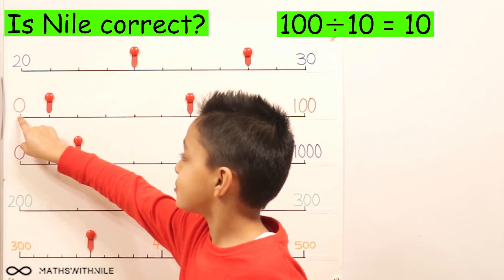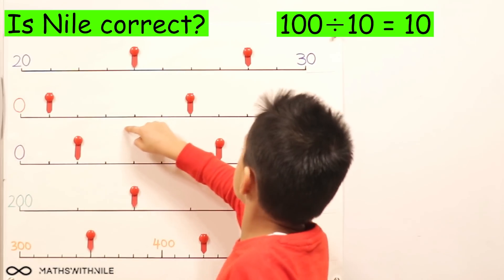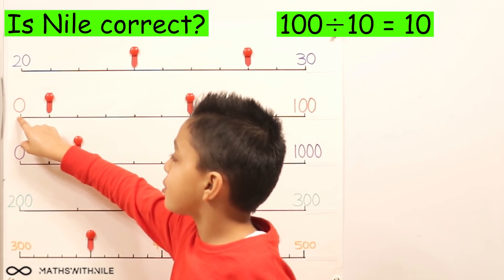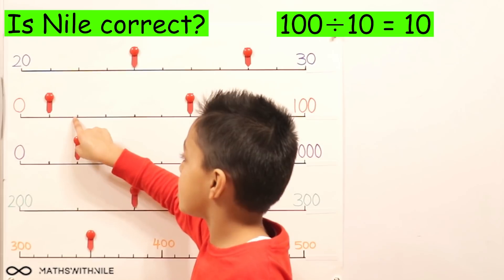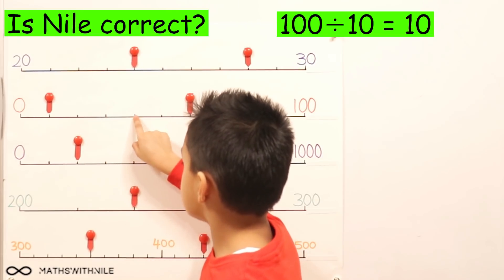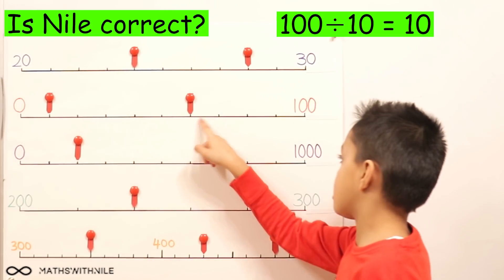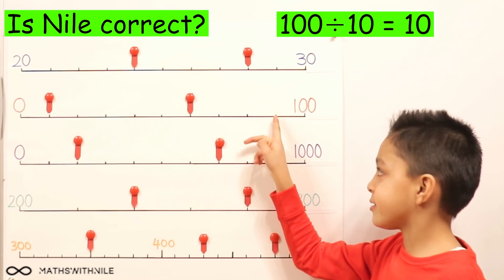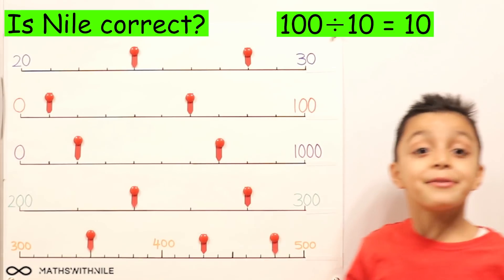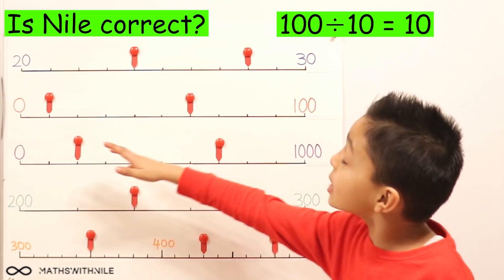I think the answer is 10, but we need to work it out just to make sure. Okay, can you check all the way across to see if we get there? Yeah, in 10s. Zero, 10, 20, 30, 40, 50, 60, 70, 80, 90, 100. So I was correct, there is 10.